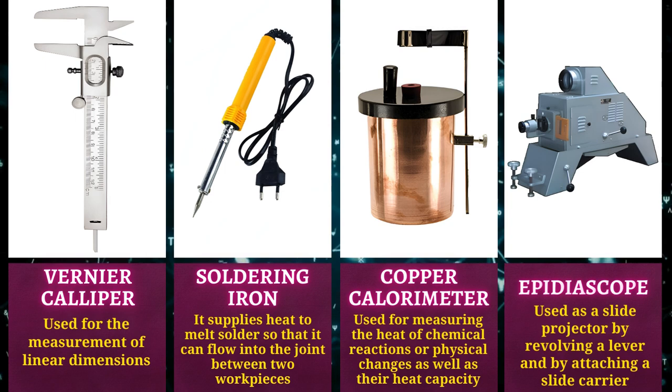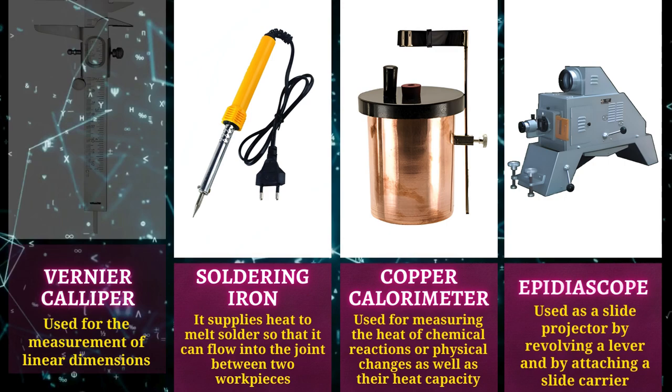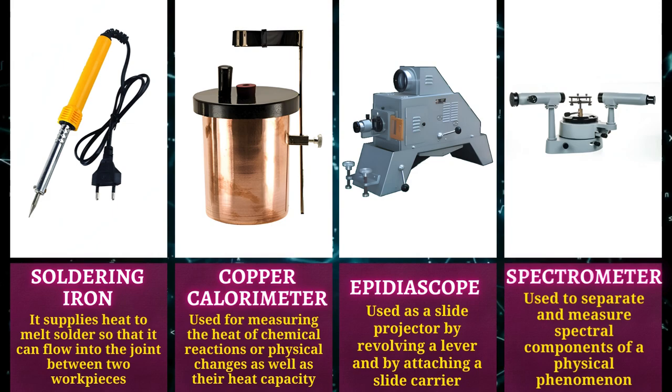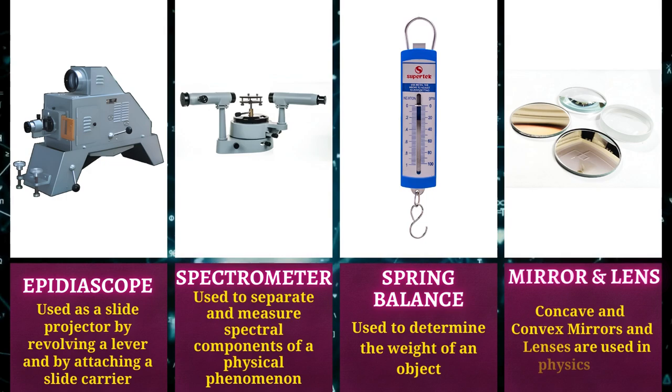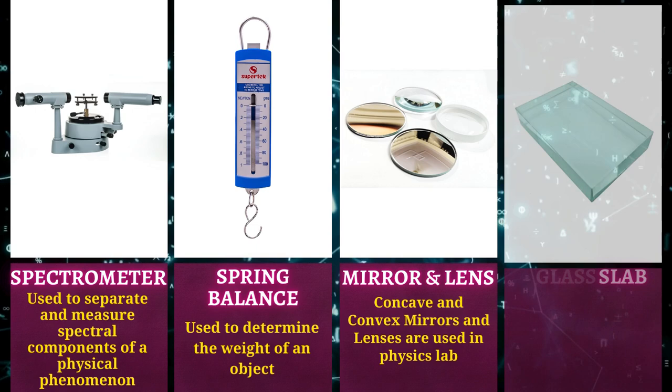Epidiascope is used as a slide projector by revolving a lever and by attaching a slide carrier. Spectrometer is used to separate and measure spectral components of a physical phenomenon. Spring balance is used to determine the weight of an object.